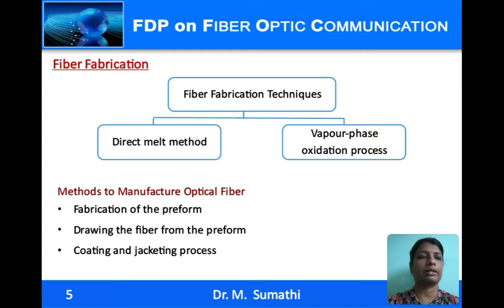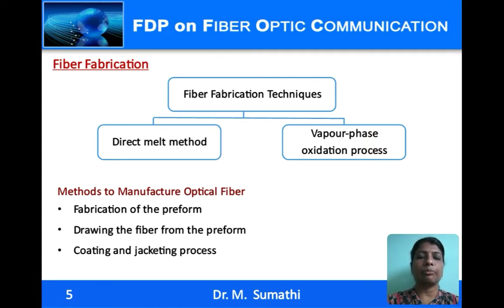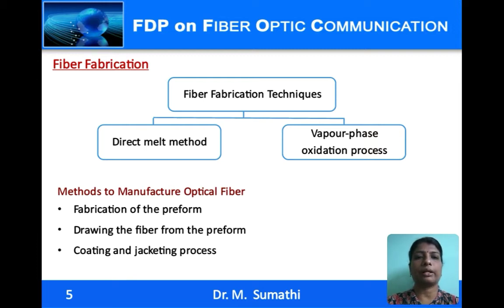There are two types of fiber fabrication techniques: the direct melt method and the vapor phase oxidation method. The direct melt method is a traditional method — when glass is heated to very high temperatures it softens and turns into a viscous liquid, and from this molten form the fiber is drawn directly. The vapor phase oxidation method is the popularly used method today, where reactants are made to react in vapor form, resulting in high purity glass fiber and lower attenuation.